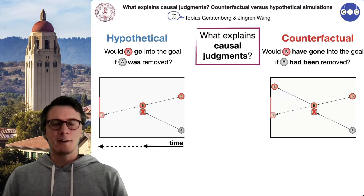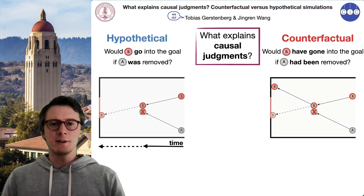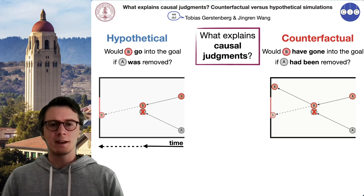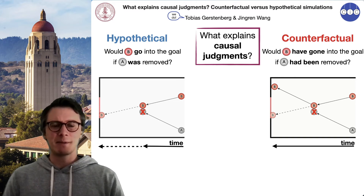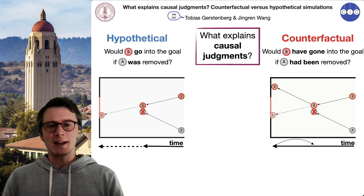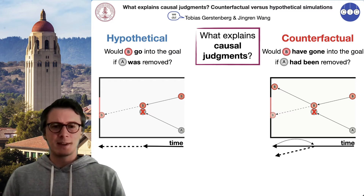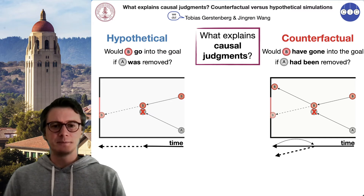A counterfactual asks whether ball B would have gone into the goal if A had been removed from the scene. Here, taking into account everything that happened until the end, then going back in time, removing ball A from the scene, and simulating what this counterfactual would have looked like.